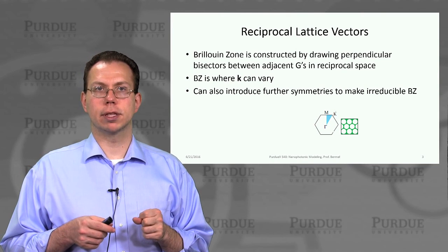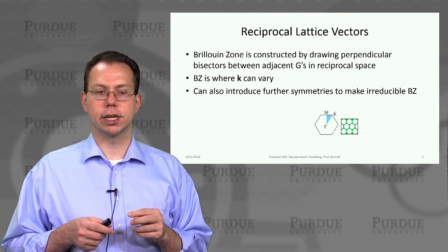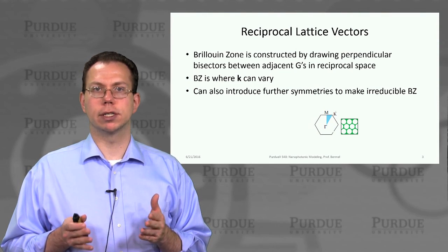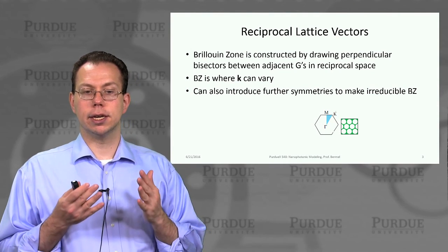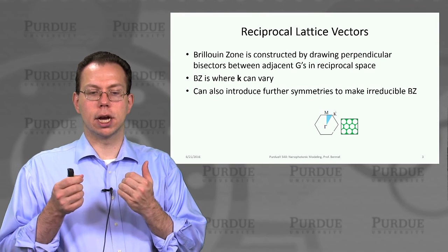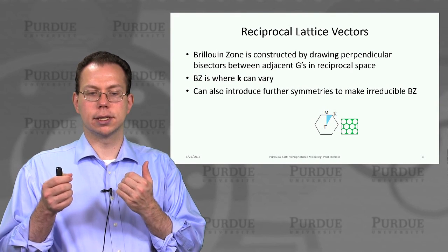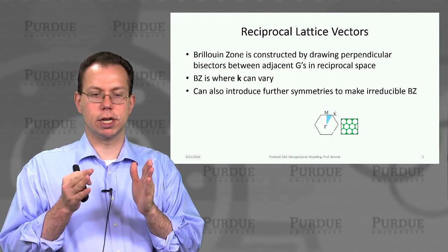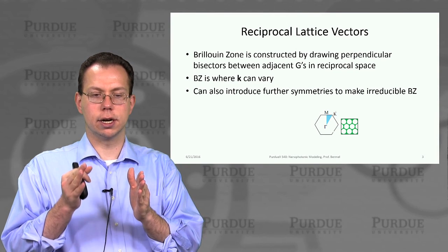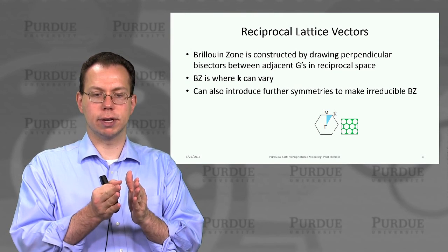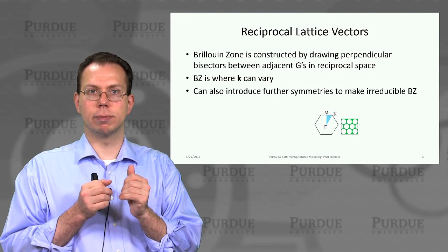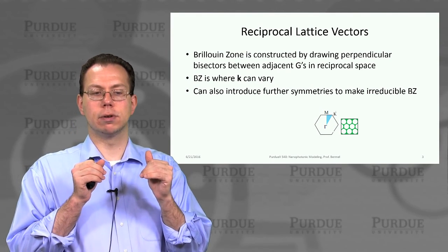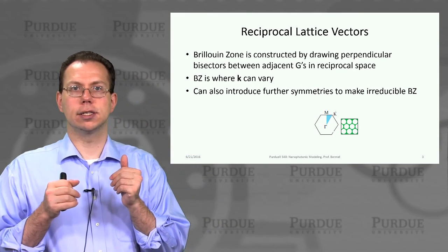Setting up the reciprocal lattice vectors in more than one dimension, you can use them to construct something very important called the Brillouin zone. The Brillouin zone captures the intersections between adjacent G's in the middle — the perpendicular bisectors. In 1D, if you have G equals zero and then G equals 2 pi over a, right in the middle you have pi over a as your Brillouin zone boundary. So from minus pi over a to plus pi over a is your Brillouin zone, where k can vary and you get unique solutions.